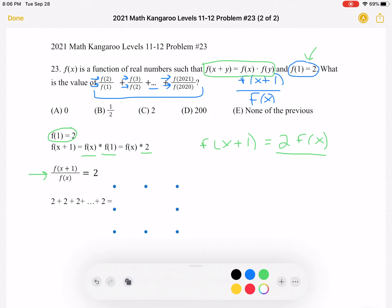And now we just need to find what the sum of all those 2s is. Well, we know that we're going from f(1) in the denominator, f(2) in the denominator, all the way to f(2020). So we have 2020 terms, each with a value of 2 for a total sum of 4,040.